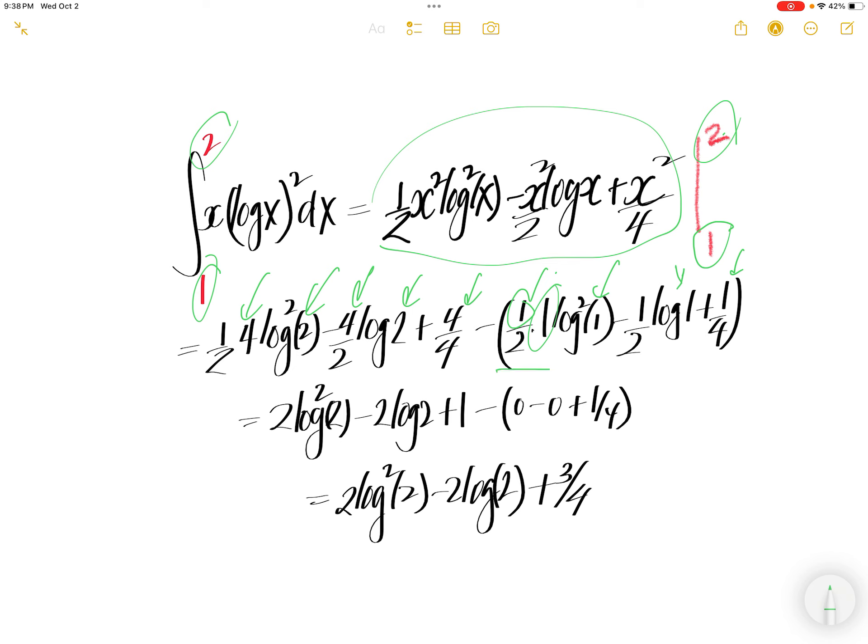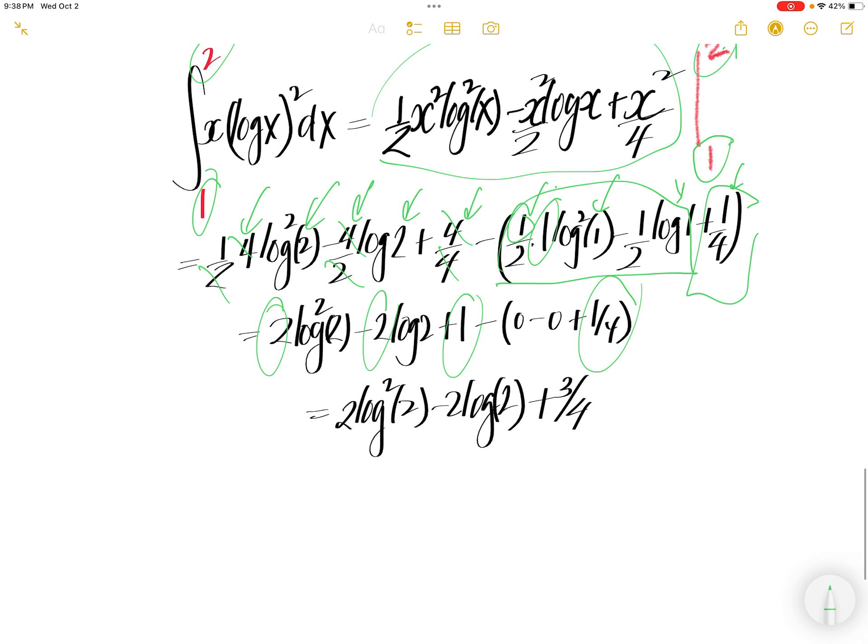Log of 1 is 0. So this whole thing is 0 except 1 quarter. And then 2 and 4, you get 2. And then 2 and 4, you get 2. 4 and 4 cancel, you get 1. And then you have this piece is over here. Minus 2 log 2 is here. 1 minus 1 quarter is 3 quarter. Done.